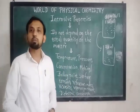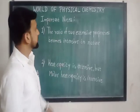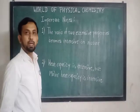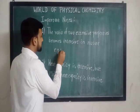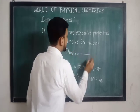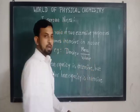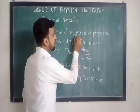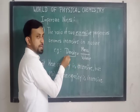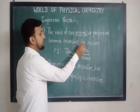When we deal with extensive and intensive properties, we have to remember two important notes. The first one: the ratio of two extensive properties becomes intensive in nature. For example, density is the ratio of mass and volume. As discussed earlier, mass and volume are both extensive properties. If we take the ratio of mass and volume, we obtain an intensive property — that is, density. Remember: the ratio of two extensive properties becomes intensive in nature.